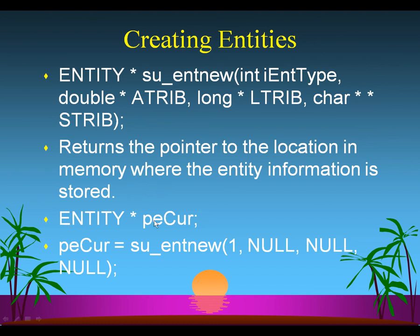For example, you can declare a variable — say, p_ecur — that is of type entity pointer. Then you can use this in any function which requires an entity pointer. If we call su_intnew with the etype set to one and null attributes in all cases — using the special reserved word null from SLAM, which puts zeros or blanks in all the attributes — it returns the entity pointer and stores it in p_ecur. You can then use that for filing the entity in files or scheduling new events to occur for this particular entity.